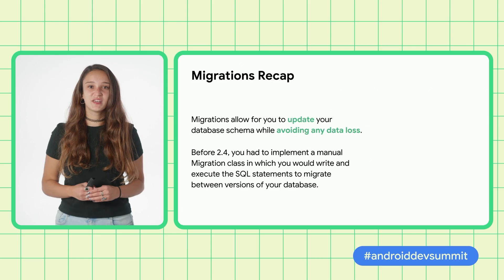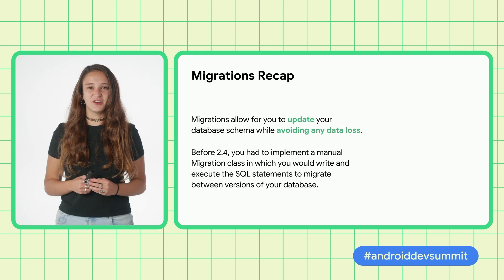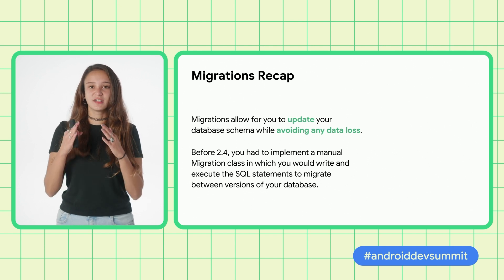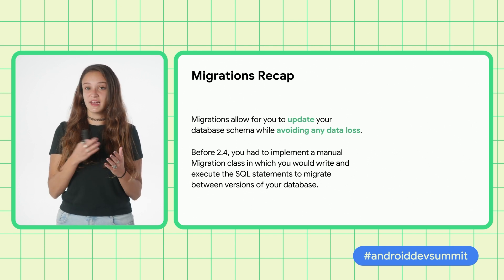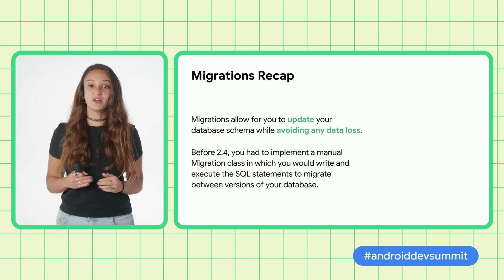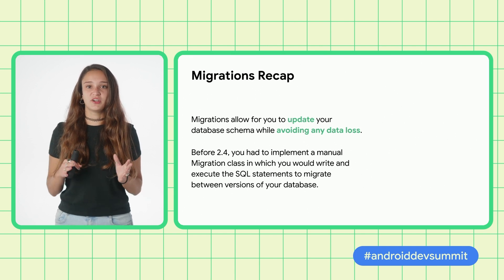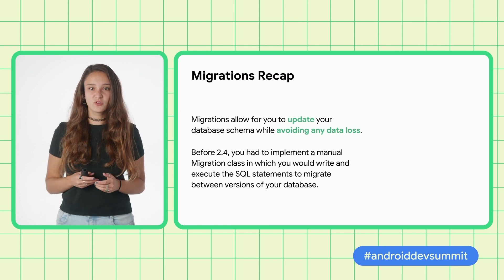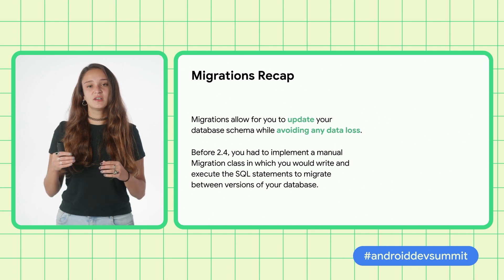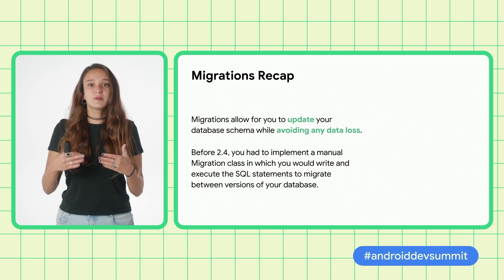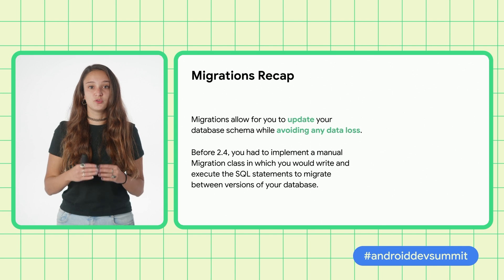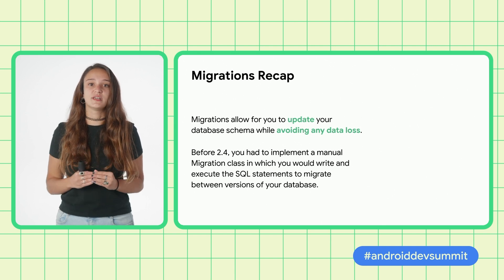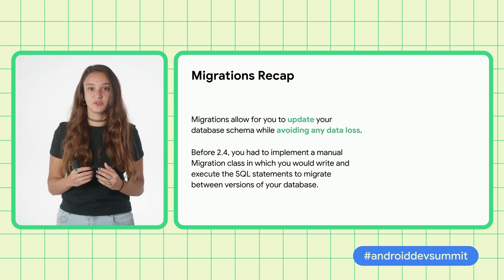Let's do a quick recap before we barge into the Room. What is a migration? A database migration allows you to update your database schema with any changes between versions, while avoiding data loss. During a migration, Room will check and validate the updated schema. The schema can also be exported if the user sets a flag in the database definition. Before 2.4, you had to implement a manual migration class, in which you would write and execute all the SQL statements needed to migrate between versions of your database.